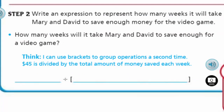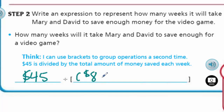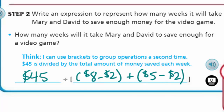Step two: write an expression to represent how many weeks it will take Mary and David to save enough money for the video game. I can use brackets to group operations a second time. 45 is divided by the total amount saved each week, so we write 45 divided by [(8 - 2) + (5 - 2)].